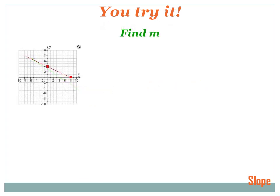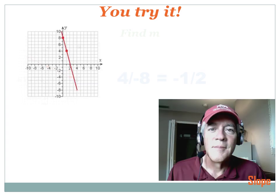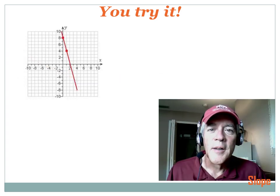You try this one — find m, where m equals slope. Hit your pause button, try the problem, then hit your forward key. Starting at the point on the right, to get up to the level of the other point I go up one, two, three, four spaces, so the rise is positive four. Then to reach the other point: one, two, three, four, five, six, seven, eight in the negative direction, so the run is minus eight. Slope equals four over minus eight, which reduces to minus one-half.